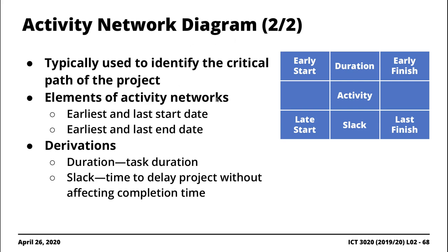This diagram is typically used to identify the critical path. Key elements include the early start date, early finish date, late start date, late finish date, the duration associated with the task, the slack, and the activity name.